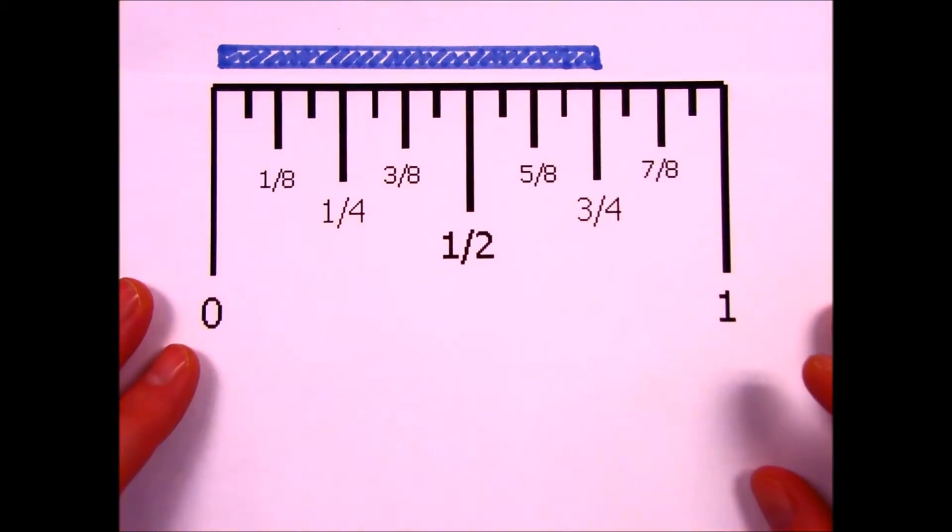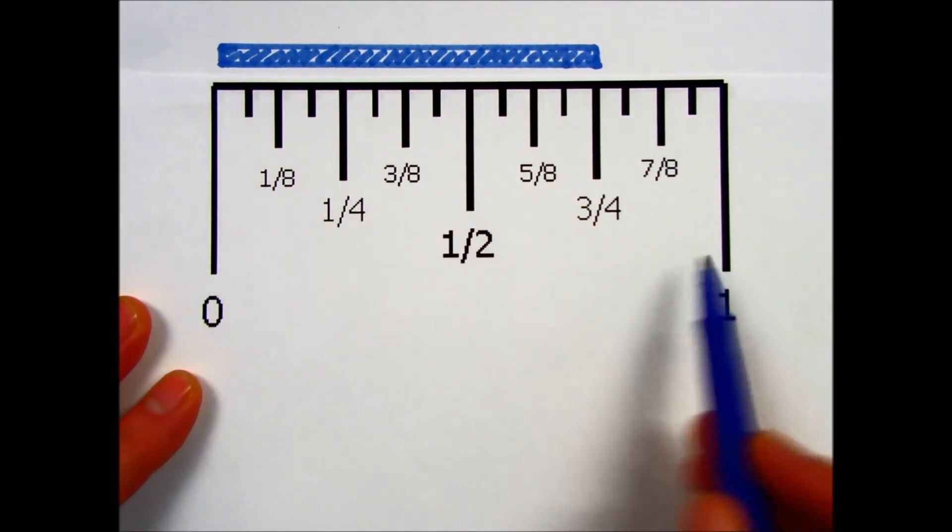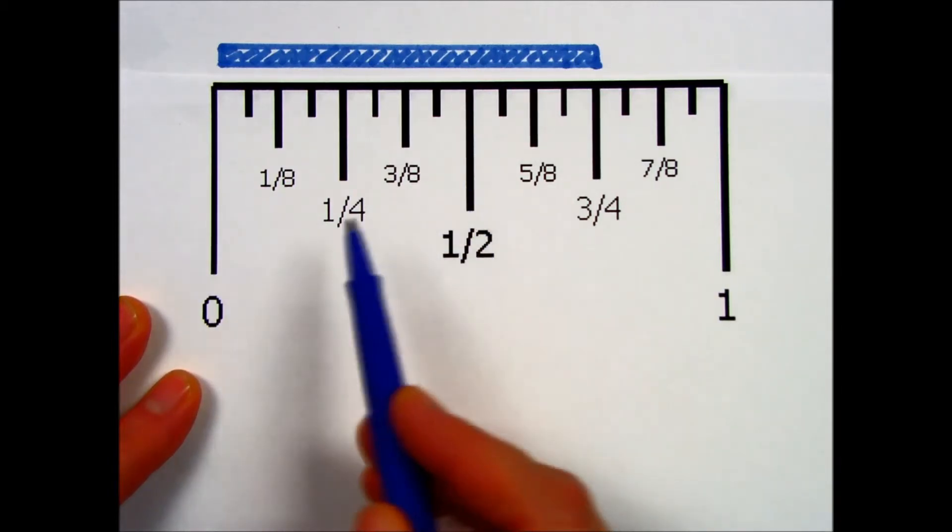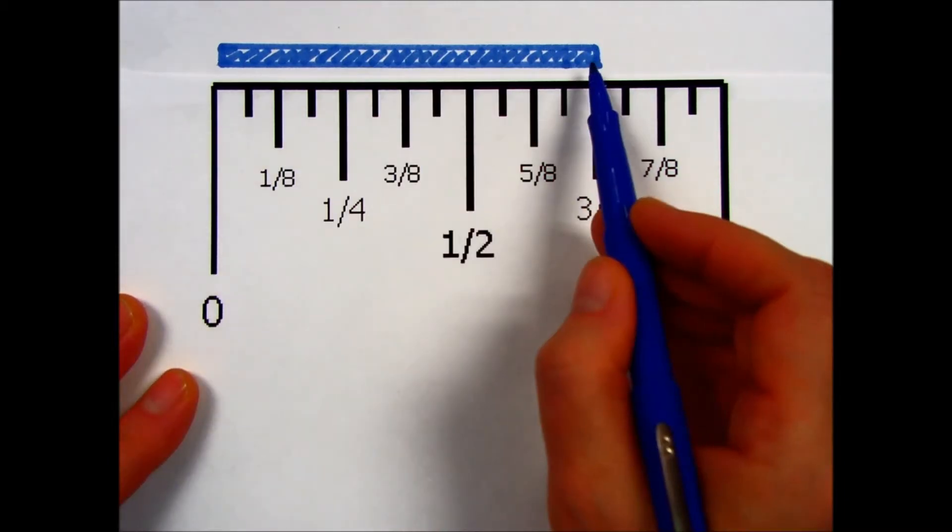Let's say that I would like to measure the length of this blue object, and I bring up a ruler representing 1 inch, which is typically divided into halves, quarters, and eighths.